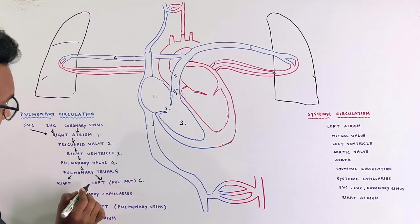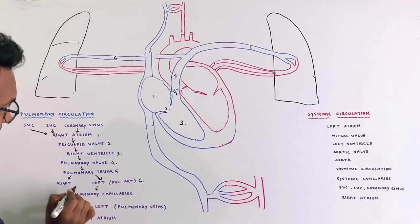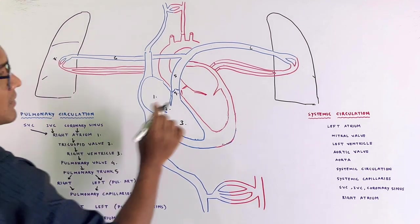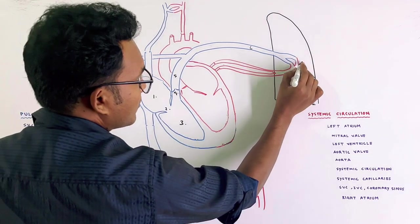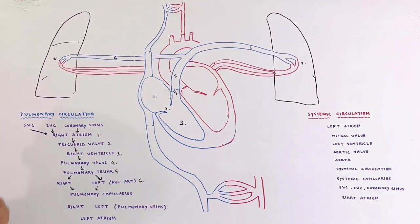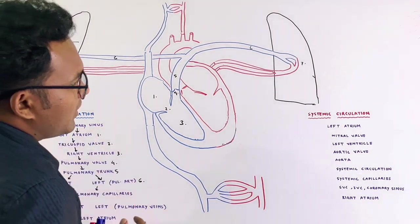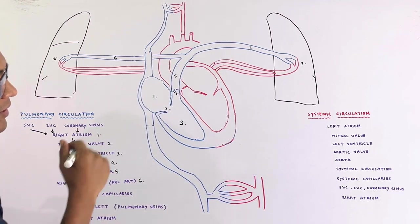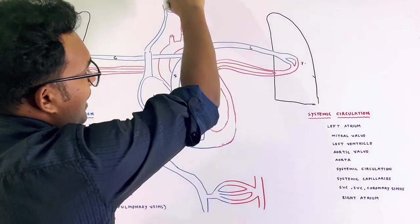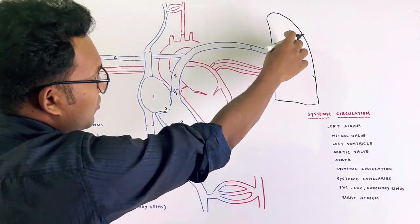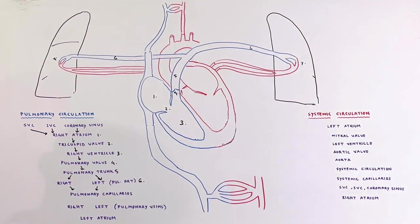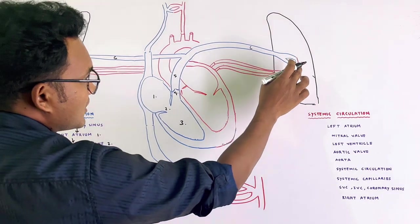In the lungs, blood passes through the pulmonary capillaries on both sides. At the pulmonary capillaries, deoxygenated blood releases CO2 to the alveoli and picks up oxygen, becoming oxygenated blood.